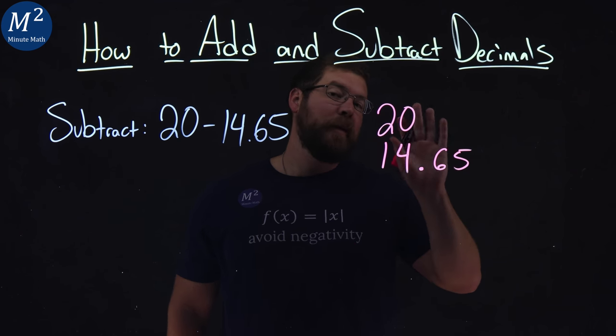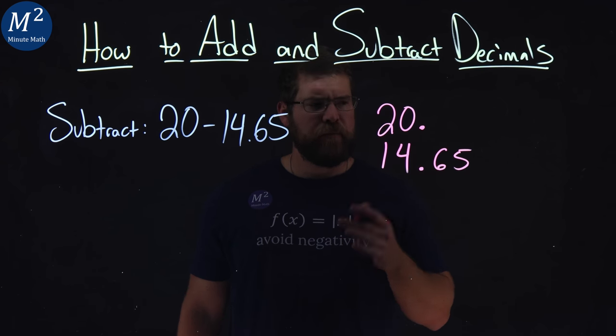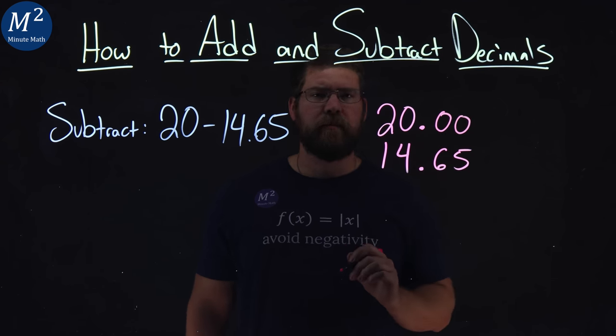Now, with the 20, we want to make sure we have place values for them as well. So we add a decimal place. We can't change the number, so we just add zeros right here.